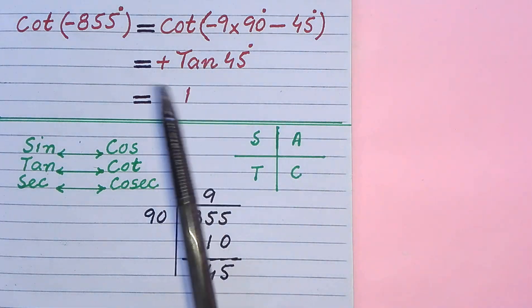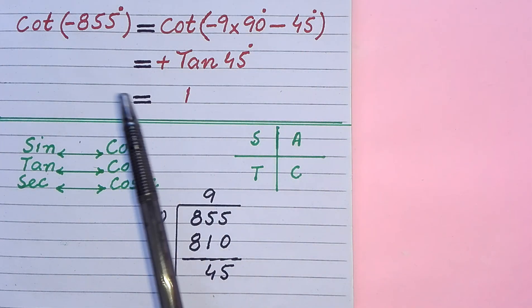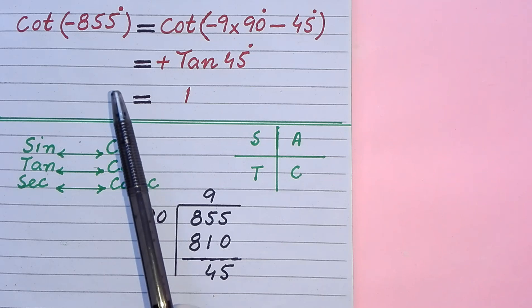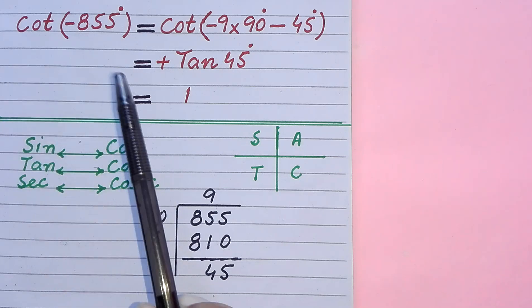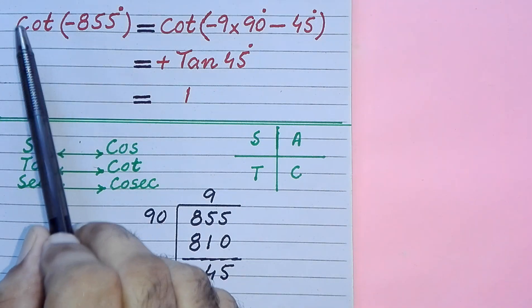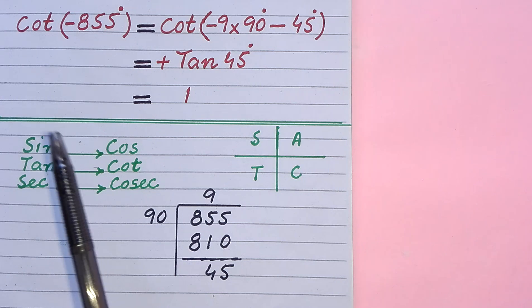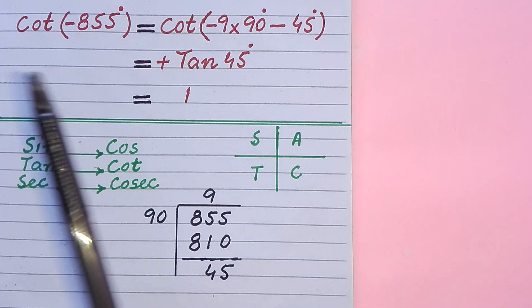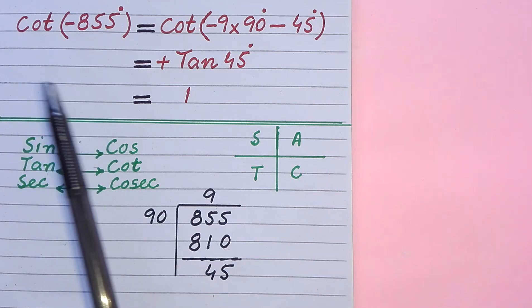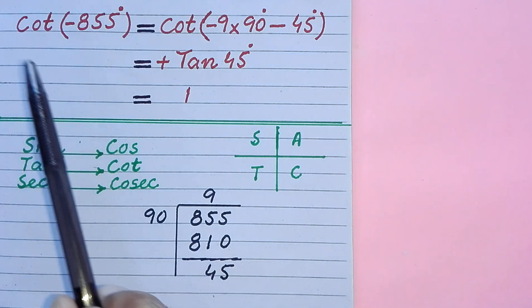Now we have to do three things. First, we have to decide about the sign of the given function. Second, we have to decide about the status of the given trigonometric function. And third, we have to find the value of the given trigonometric function.